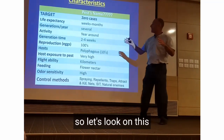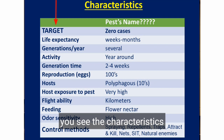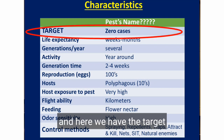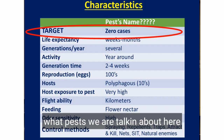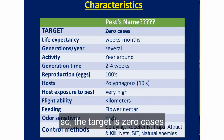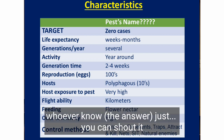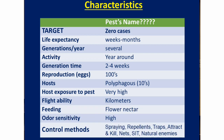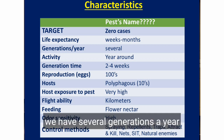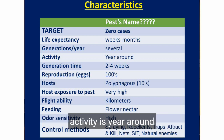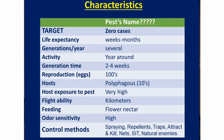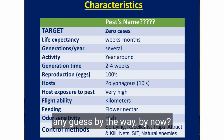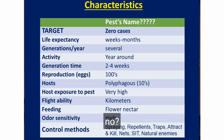Let's look at this. You can see the characteristics, and here we have the target — you need to guess what pest we're talking about. The target is zero cases, and the life expectancy is between weeks and two months. We have several generations per year; generation time is two to four weeks.